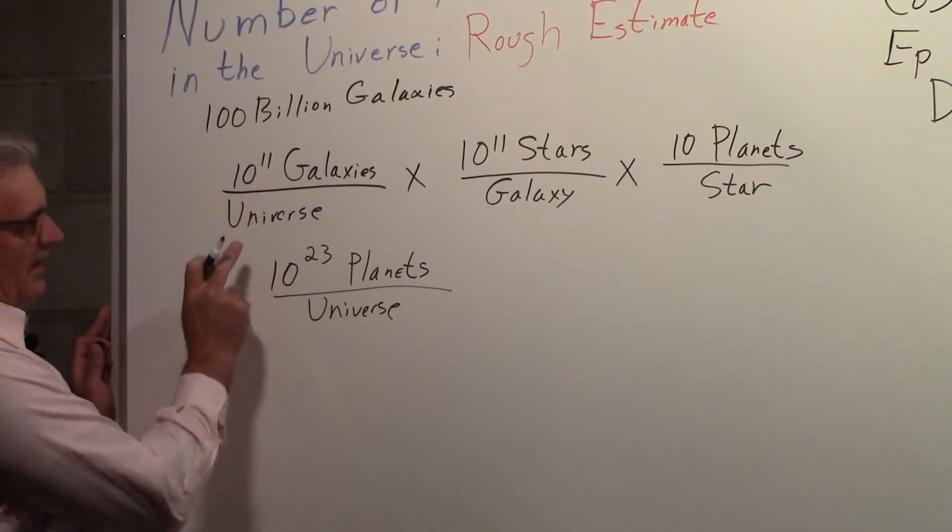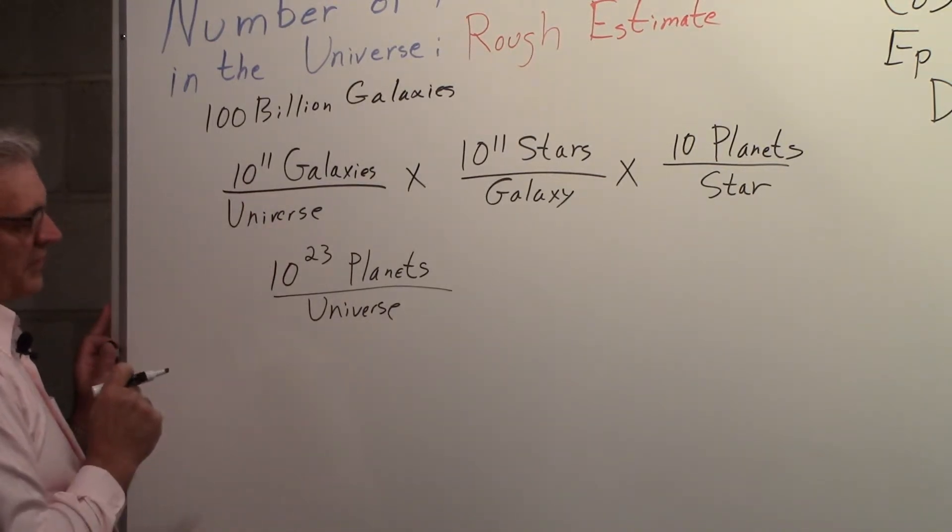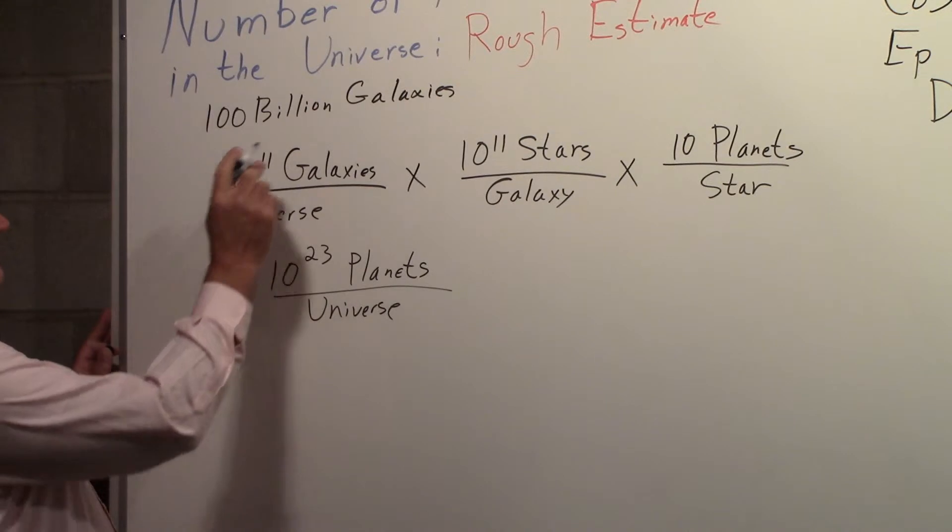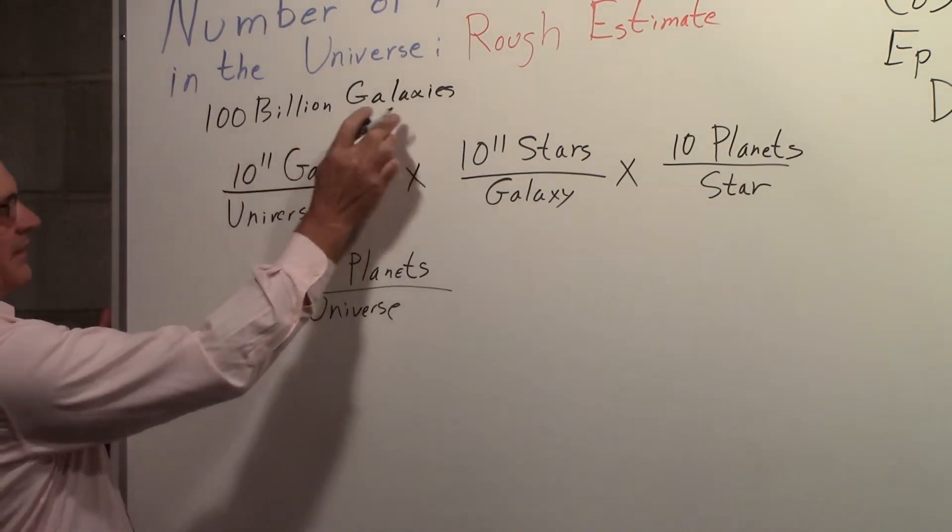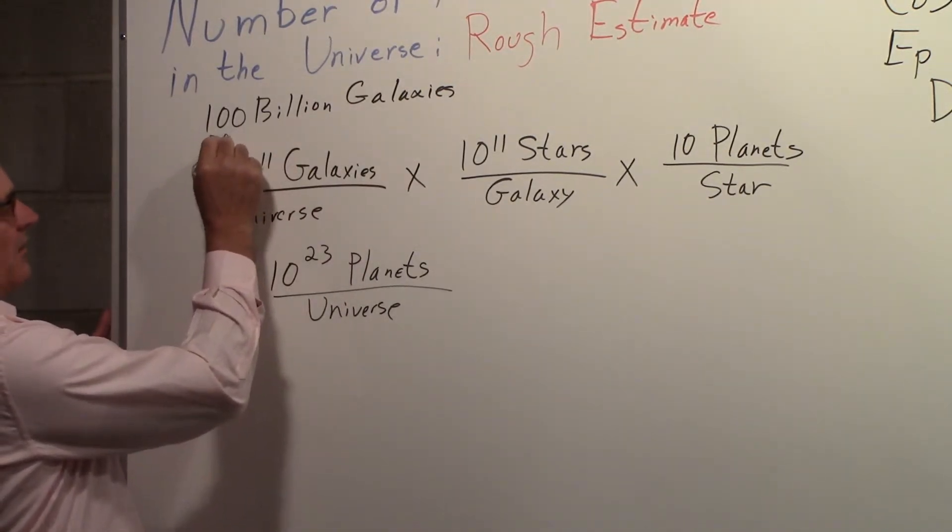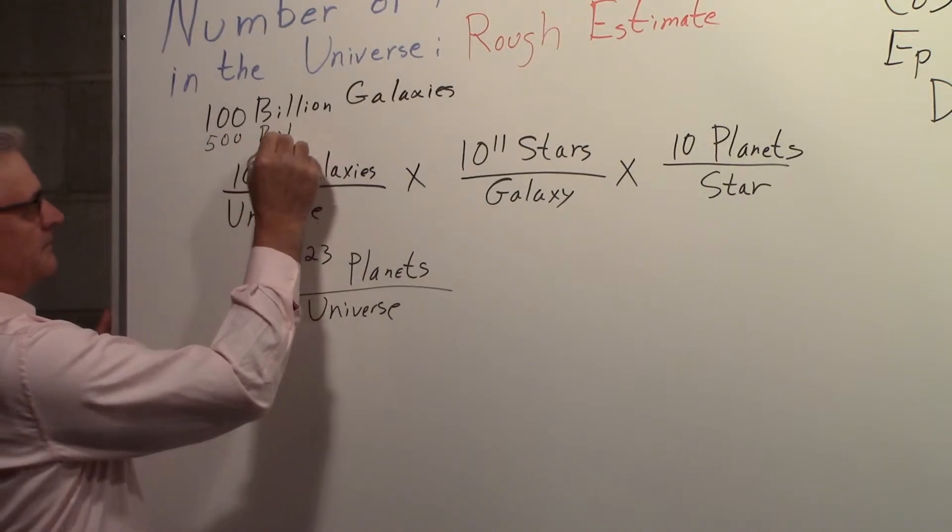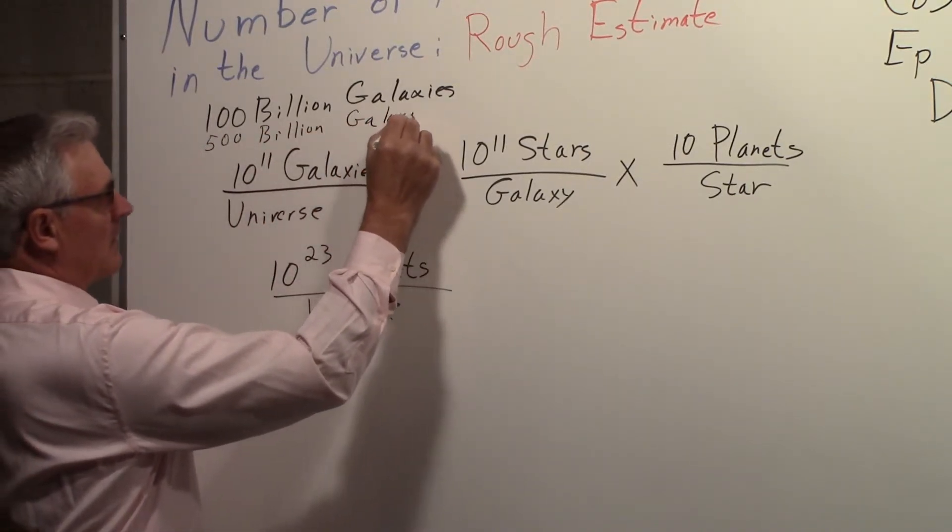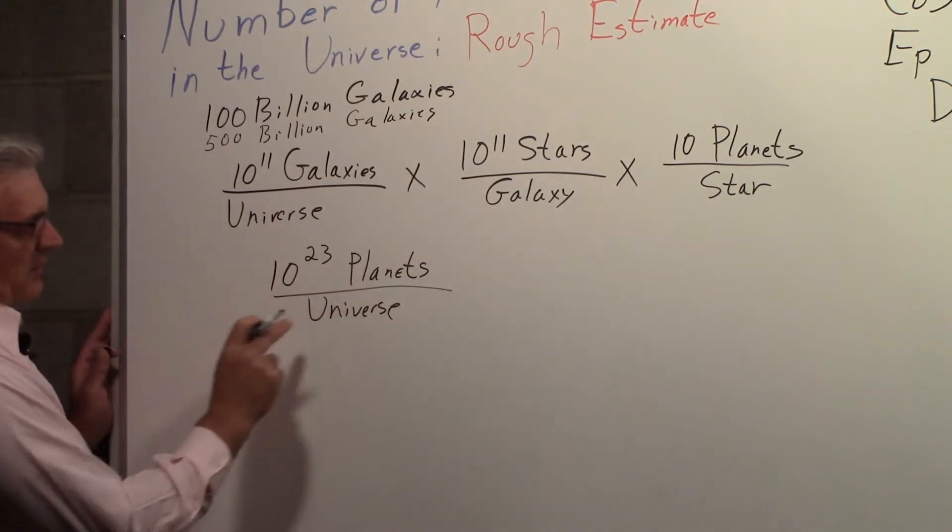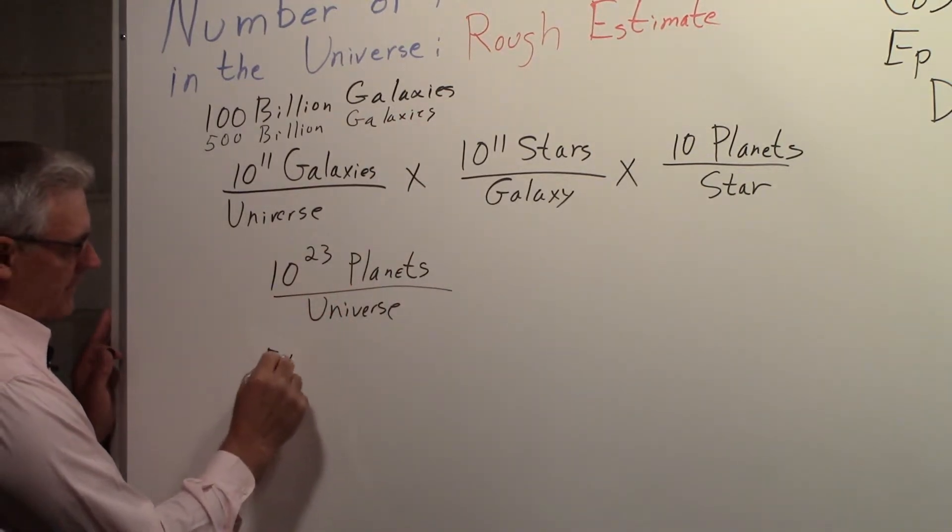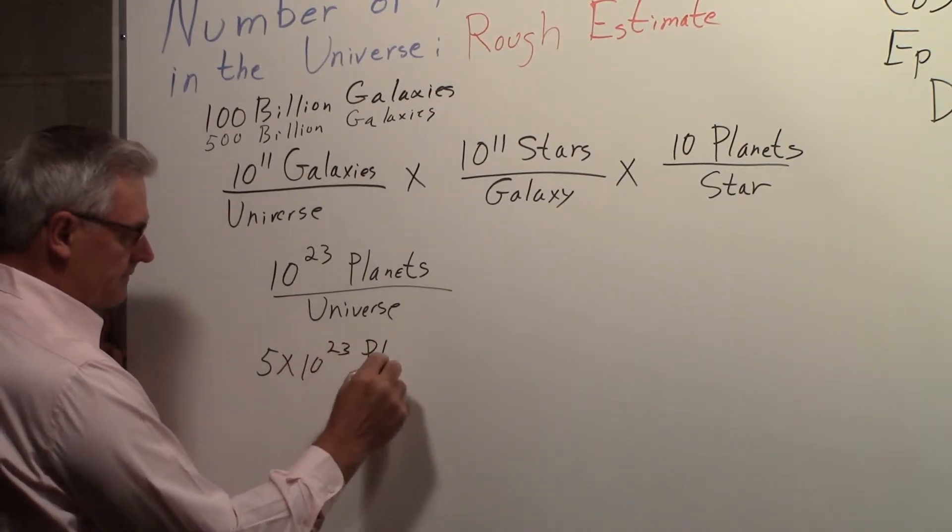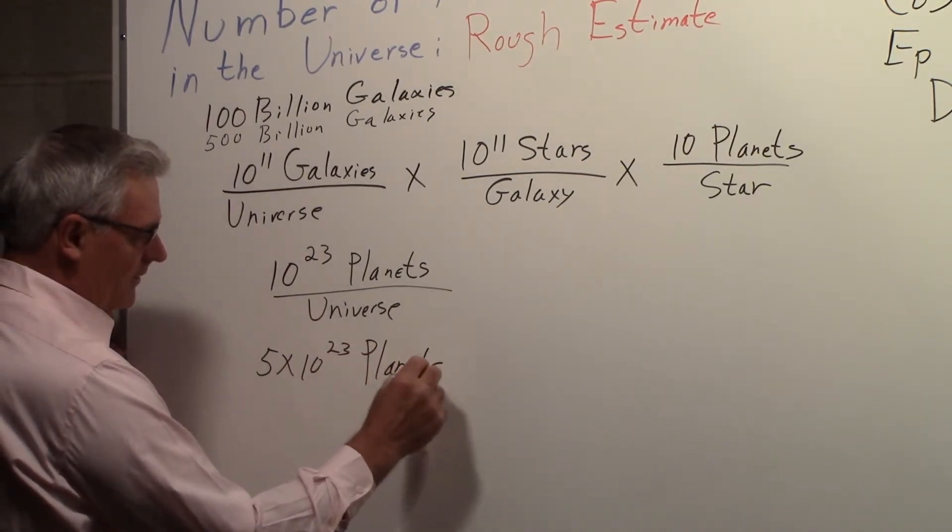Another number I have seen for the number of galaxies has increased it by a factor of five. So if we bring in that factor of five, instead of a hundred billion galaxies, there are five hundred billion. Then what we would have would be five times ten to the twenty-three planets in the universe.